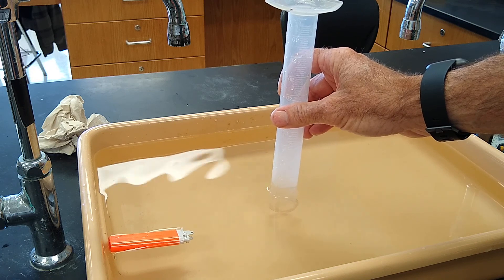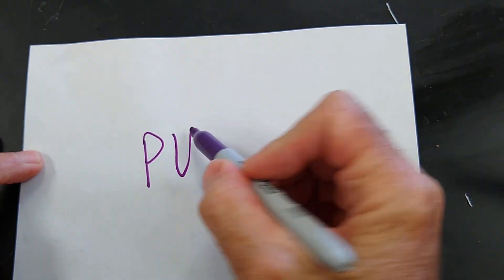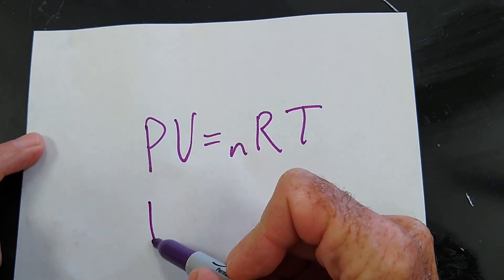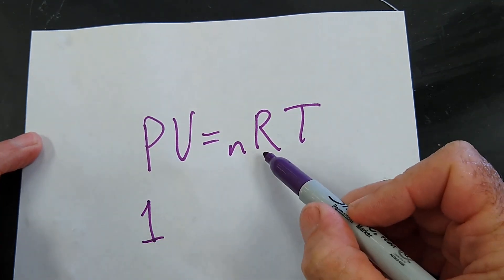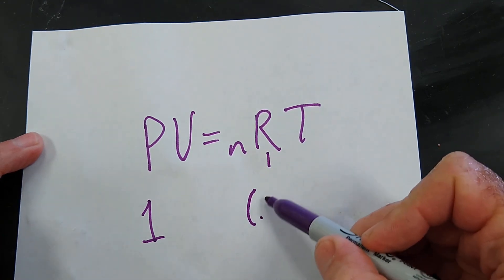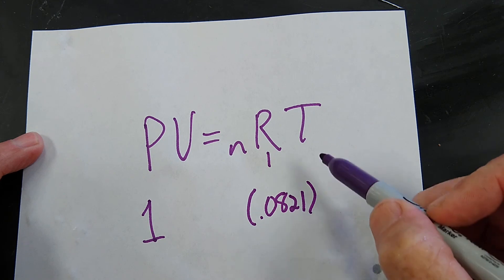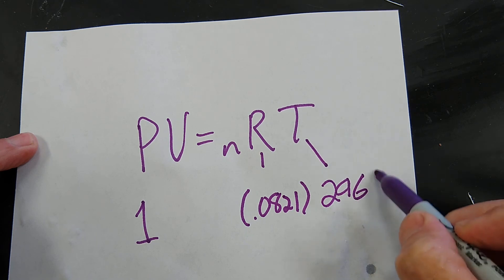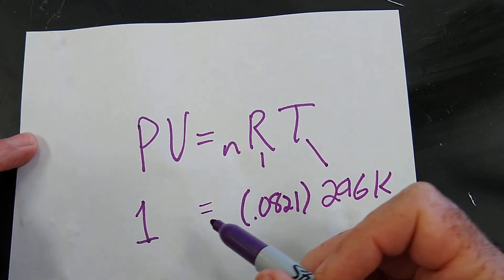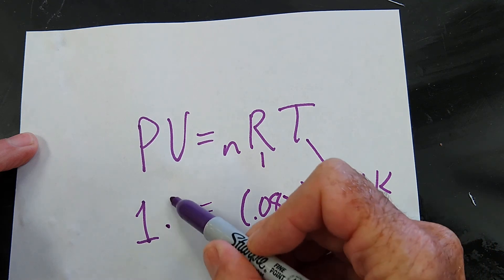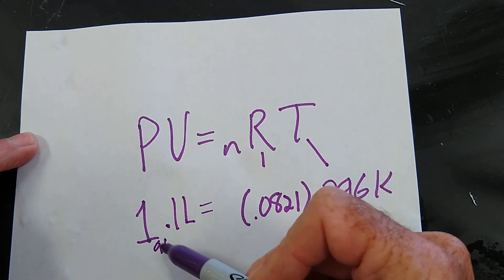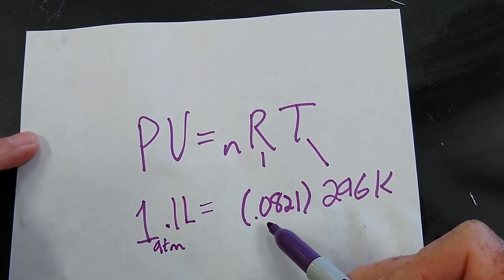Let's do that real quick. So PV equals NRT. The pressure in here is one atmosphere. Since we're using atmospheres, our R is going to be 0.0821. The temperature in here is room temperature, so that's 296 degrees Kelvin. And the volume of that graduated cylinder is 0.1 liters or 100 milliliters. So we have one atmosphere, 0.1 liters, 0.0821, 296.